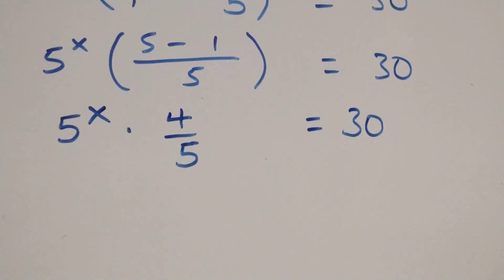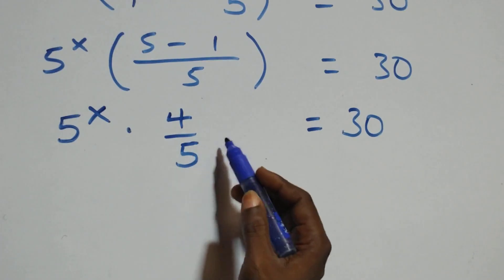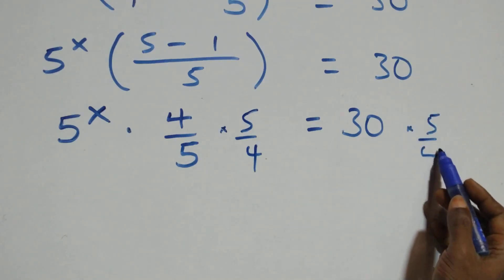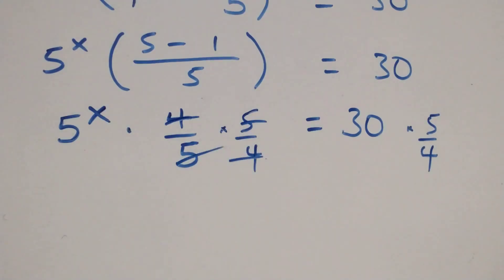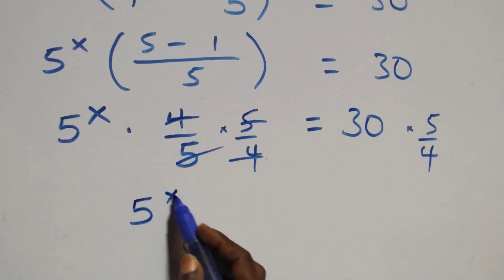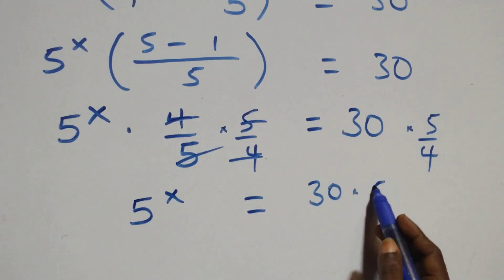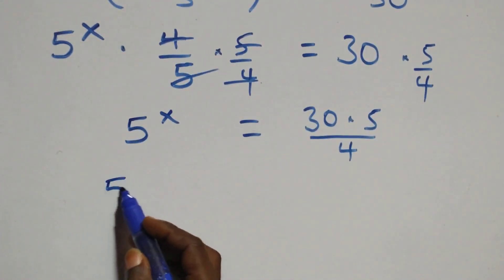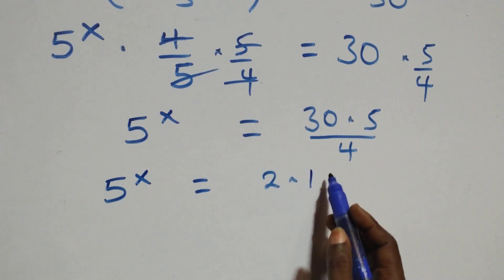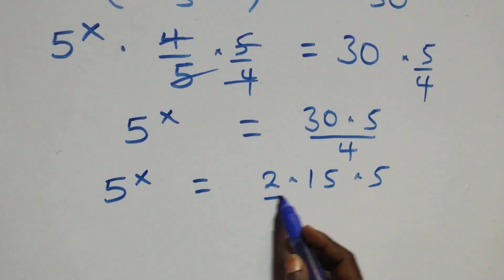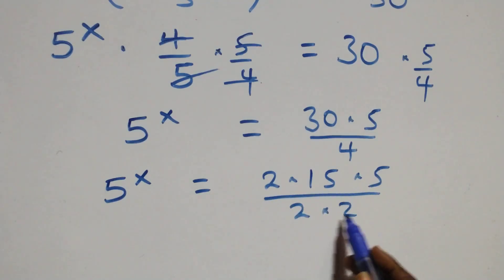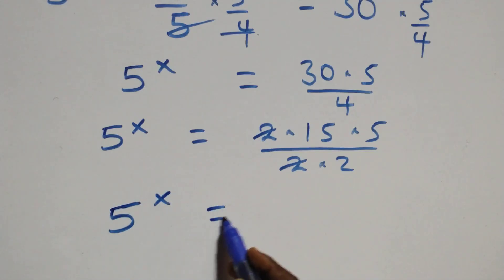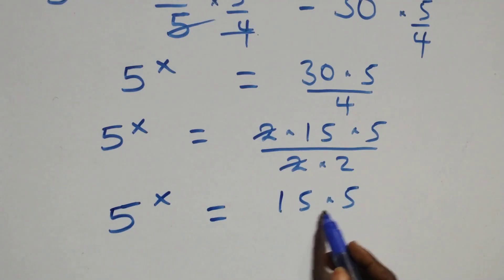Then we remove the 4 over 5 on this side by multiplying both sides by the reciprocal, which is 5 over 4. These cancel each other, and we have 5 raised to power x equals to 30 times 5 over 4, which is the same as 5 raised to power x equals to 15 times 5 over 2.